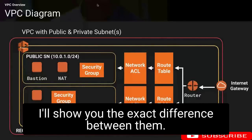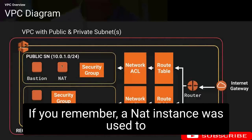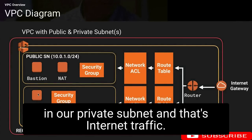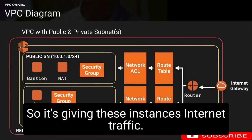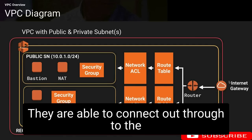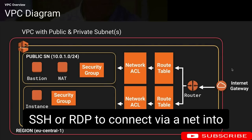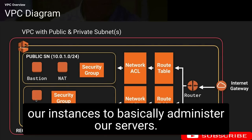Have a look at a network diagram and I'll show you the exact difference between them. A NAT instance was used to route traffic to our EC2 instances that are in our private subnet — that's internet traffic. It gives these instances internet access; they are able to connect out through to the internet, but people on the internet couldn't use SSH or RDP to connect via NAT into our instances to administer our servers.